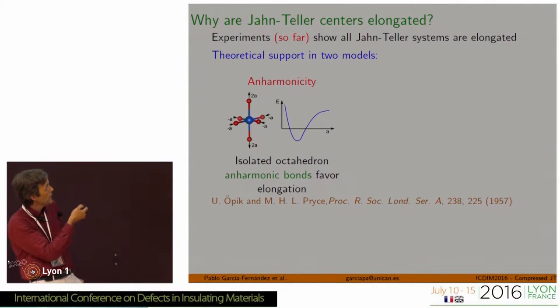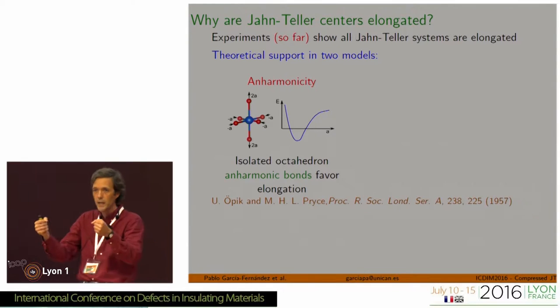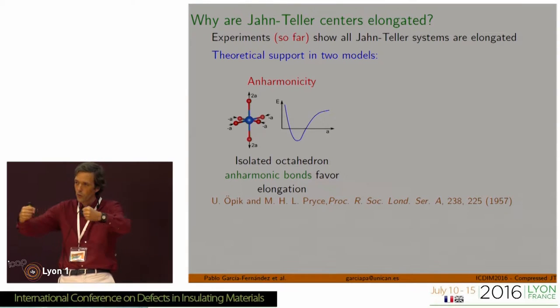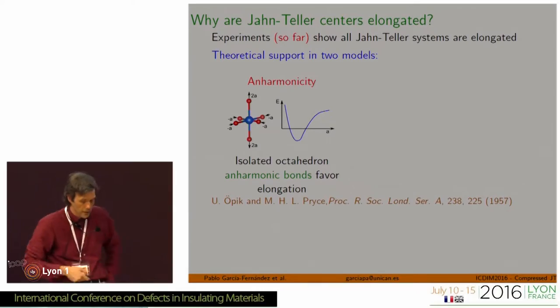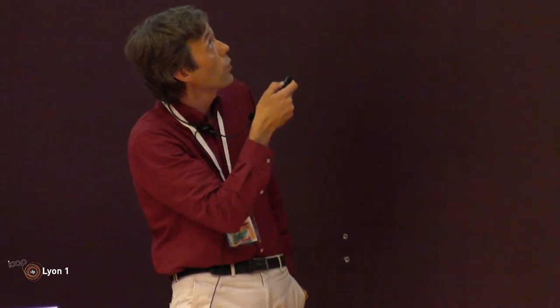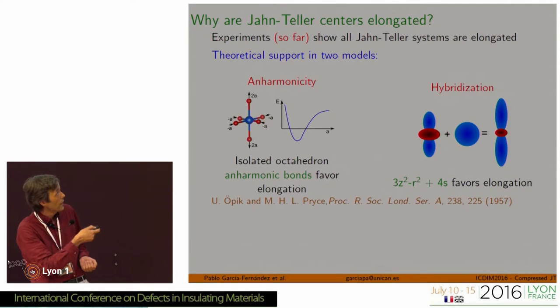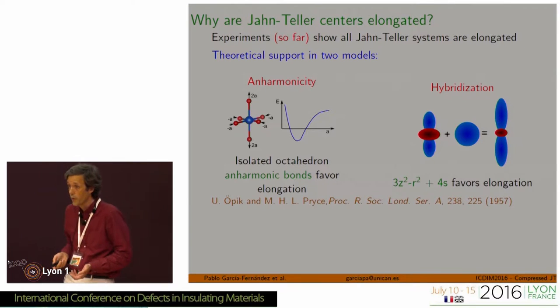The idea was early published by Opik and Price. The concept is very simple: they focus on how chemical bonds react to elongation or compression. The idea is that energetically it is favorable to elongate a bond rather than compress it. When you apply that to the kinds of distortions that appear in a Jahn-Teller complex, that always favors elongation. There are also chemical factors like hybridization that, in some cases such as DS hybridization, also favor elongation.